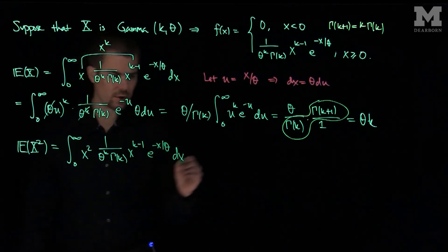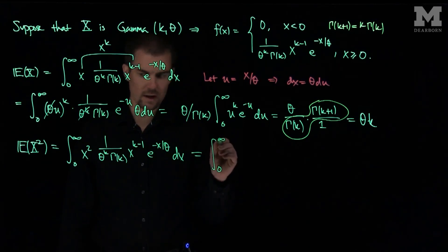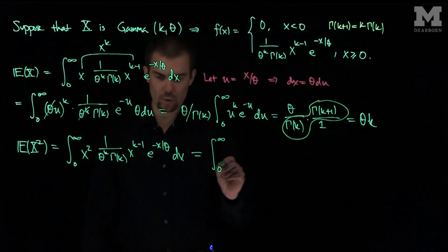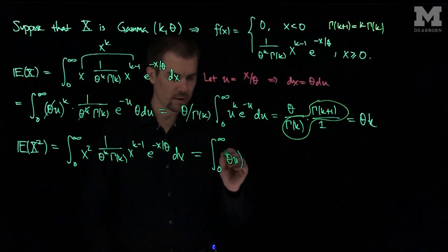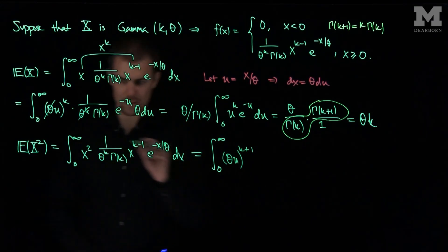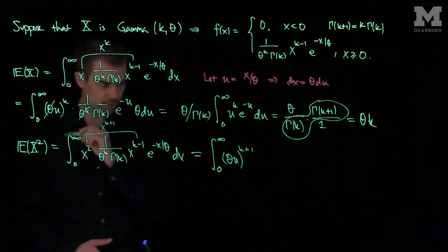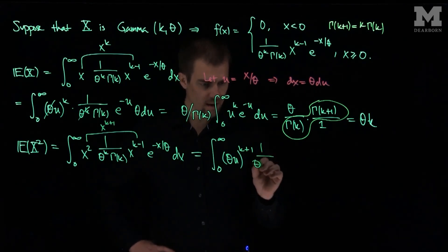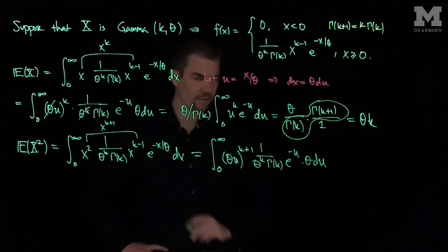Using the same substitution u = x/theta, I'll have the integral from zero to infinity of theta*u to the power k+1 — because the x terms combine to x to the k+1 — then one over theta to the k, gamma(k), e to the negative u, and theta du as before.